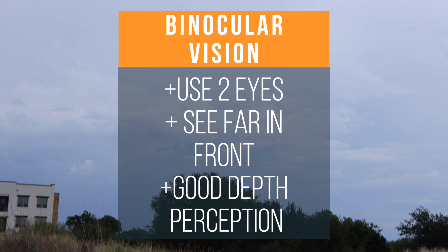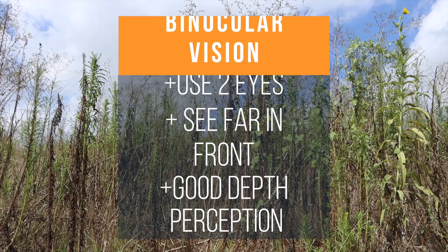This is called binocular vision — bi meaning two, and ocular having to do with our eyes or vision. If we used one eye and closed one eye, we would have monocular vision. Mono meaning one, and ocular having to do with our eyes or vision — monocular.